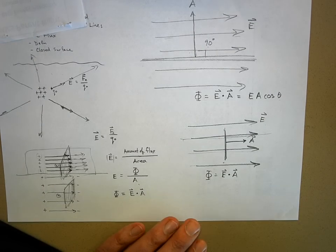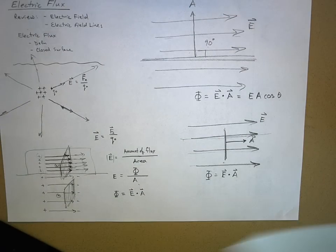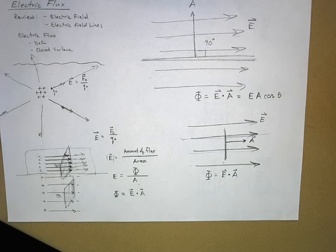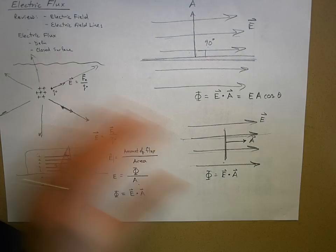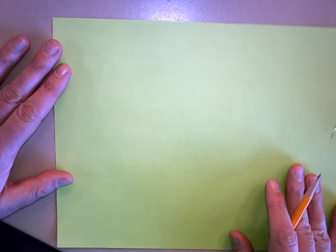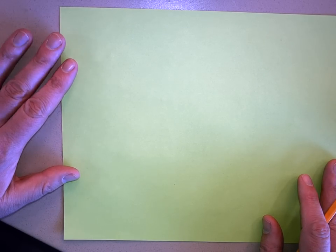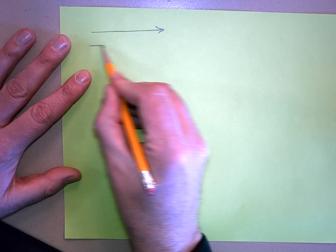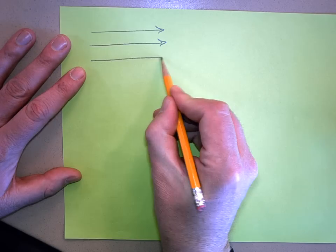Now here's something interesting. We can put the electric field lines through a closed surface. I'm going to draw a closed surface as a box — but looking at it in cross section.